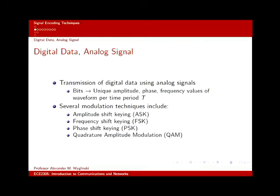Digital data with analog signals involves converting bit information — ones and zeros — and mapping it to unique amplitude, phase, and frequency values of a waveform across a time period T. These waveforms can assume a variety of features. Sometimes we manipulate only the amplitude, sometimes only the frequency, sometimes only the phase, or we can manipulate combinations of those features.